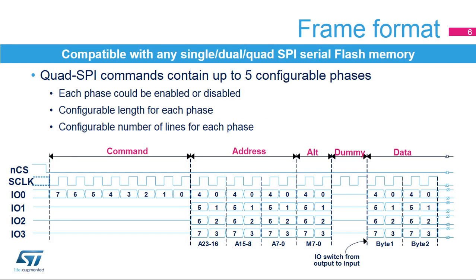The Quad SPI Memory Interface offers high flexibility in frame format configuration. This flexibility allows it to address any serial flash memory. Users can enable or disable each of the five phases and configure the length of each phase, as well as the number of lines used for each phase.